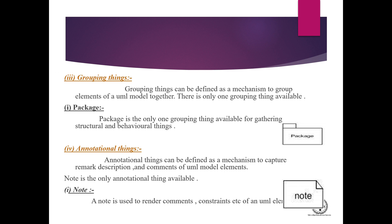Grouping things can be defined as a mechanism to group elements of a UML model together. There is only one grouping thing available: the package. A package is a gathering of structural and behavioral things, and it is represented by a specific sign. Annotational things are like comments, constraints, or notes — things we add for remembering important information.